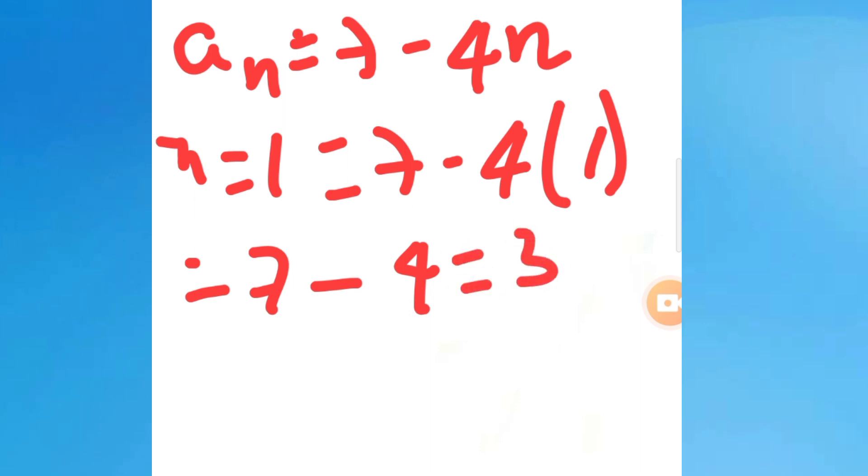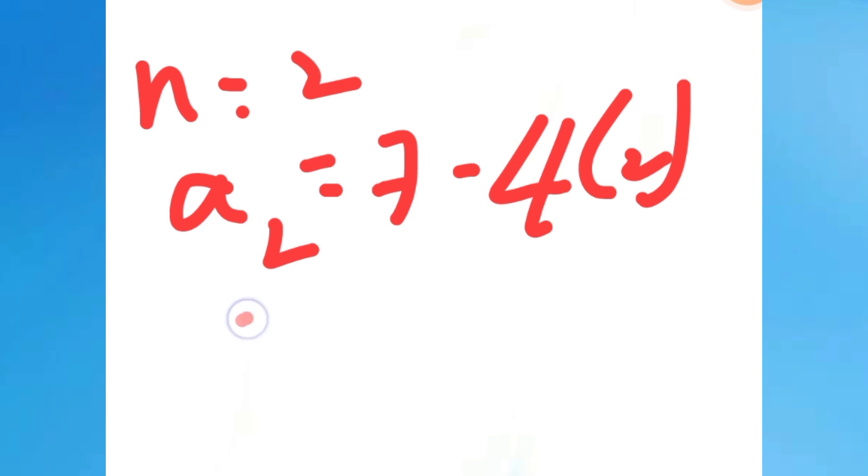Now when n = 2, a₂ = 7 - 4 × 2. Therefore that will equal 7 - 8 = -1. Okay, so now you got a₁ and a₂.